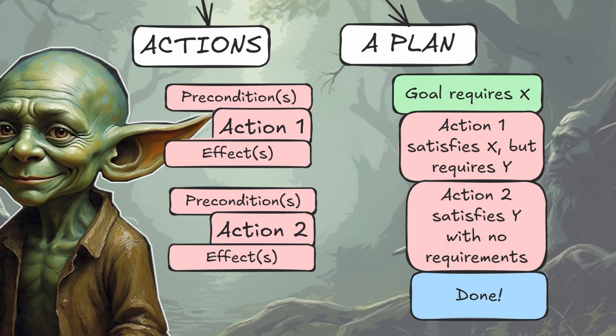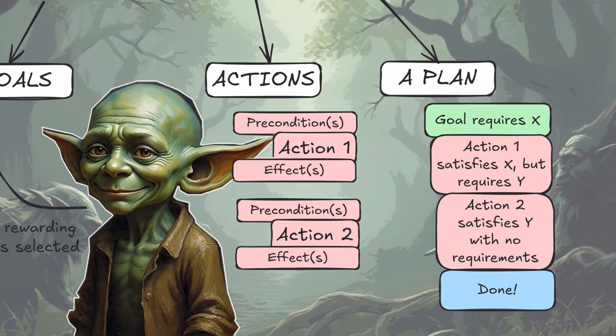Given the goal that's been chosen, we know the goal requires something to be true — something needs to happen for the goal to be achieved — and we link together the relevant actions that can help us satisfy this goal. So if the goal requires X, action 1 may be able to satisfy X but has its own precondition Y. Action 2 could be an action that satisfies Y but has no preconditions, and so our chain of conditions finishes and our agent is done planning. We have a valid plan from action 2 to action 1 to satisfy our goal.